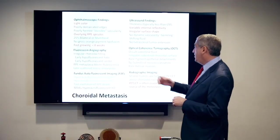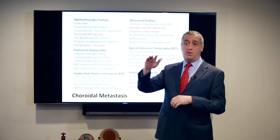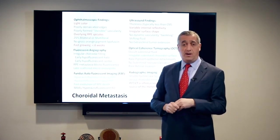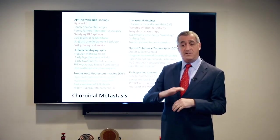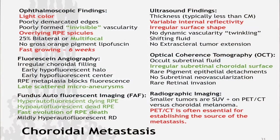In terms of OCT, unlike a melanoma that tends to be more dome-shaped, a metastasis tends to be more irregularly shaped, and that helps us with the diagnosis. Those are the clinical findings you can use in your office to help differentiate a metastasis from a melanoma.